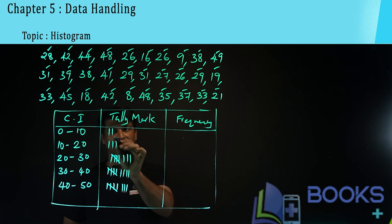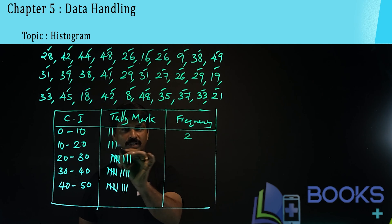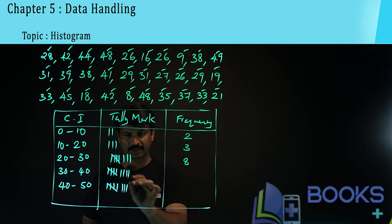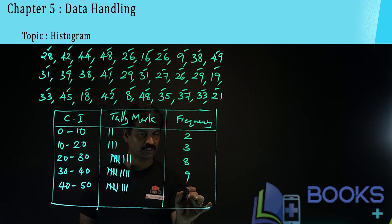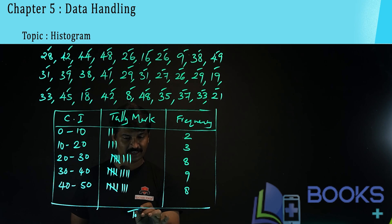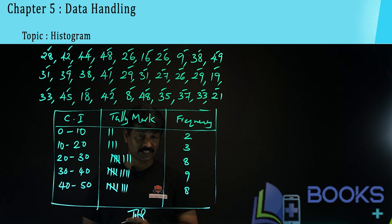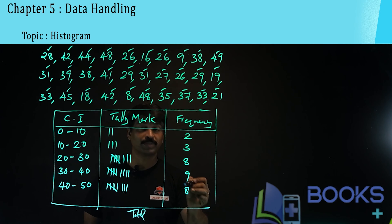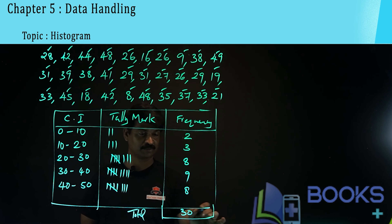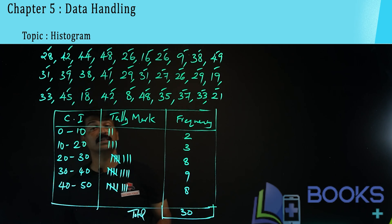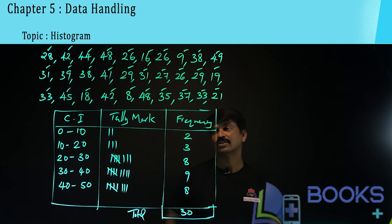Now let us write the frequency. The first interval 0 to 10 has frequency 2. The second, 10 to 20, has frequency 3. The third, 20 to 30, has 5 plus 3, that is 8. The fourth, 30 to 40, has 5 plus 4, that is 9. The fifth, 40 to 50, has 5 plus 3, that is 8. The total frequency is 2 plus 3 plus 8 plus 9 plus 8, which equals 30. We have included all the marks of the 30 students, so our frequency distribution table is correct.